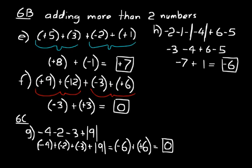Keep track of those negative signs when doing these problems, and write out as much as you need to. In section D, we cover algebraic subtraction: A minus B is the same as A plus a negative B. For example, negative two minus one equals negative two plus a negative one; six minus five equals six plus a negative five. Put parentheses around the numbers to help you think of subtraction as adding a negative number, since in algebra you work with a lot of negative numbers.